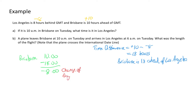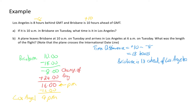We need to factor in the change of day. To get it back into a positive, I add 24 because there are 24 hours in a day, giving us 16. Converting that back into 12-hour time, I subtract 12, which equals 4 o'clock. Because the original time was 16, that indicates PM. So it's going to be 4pm in Los Angeles.